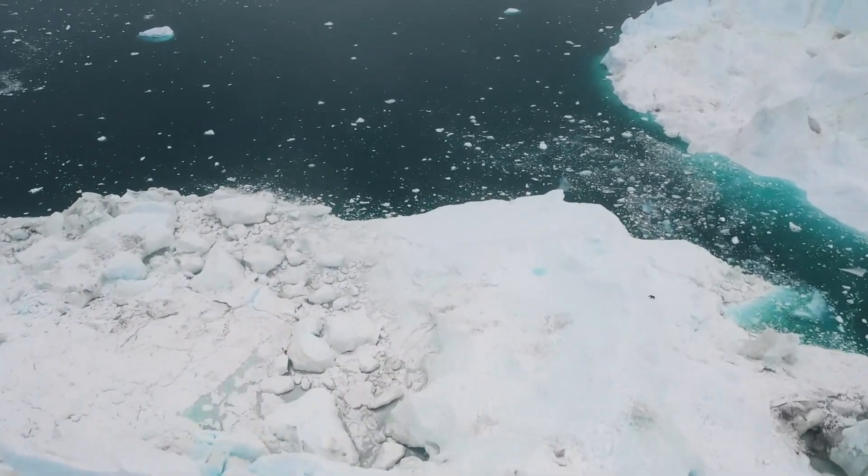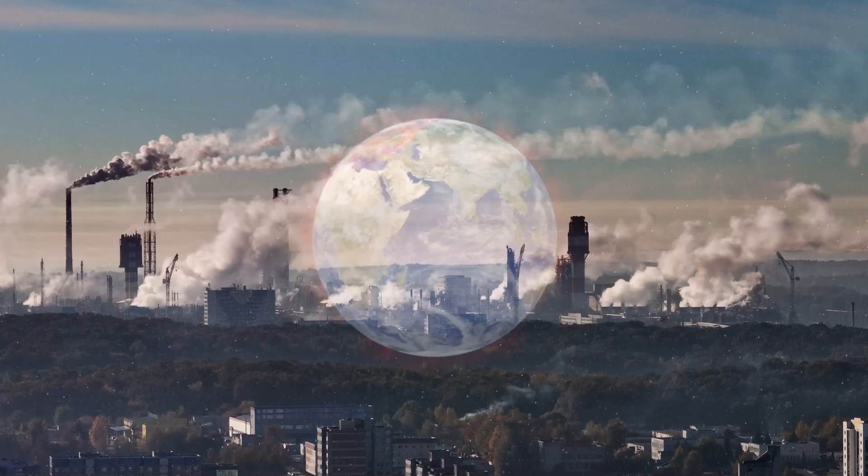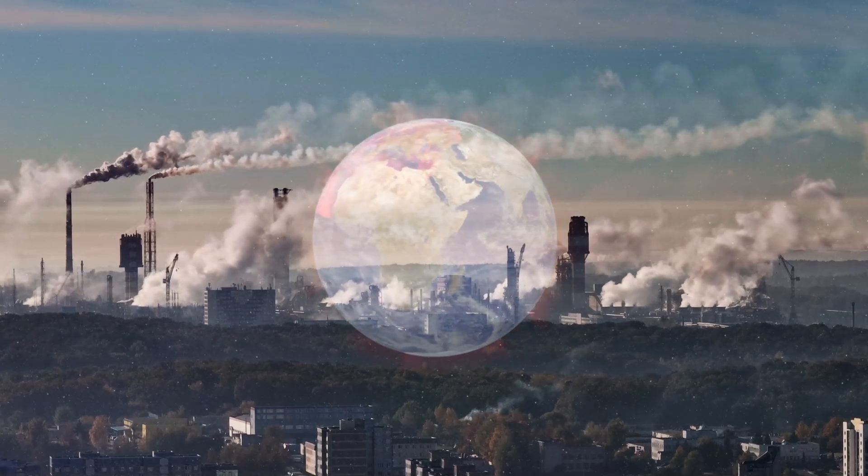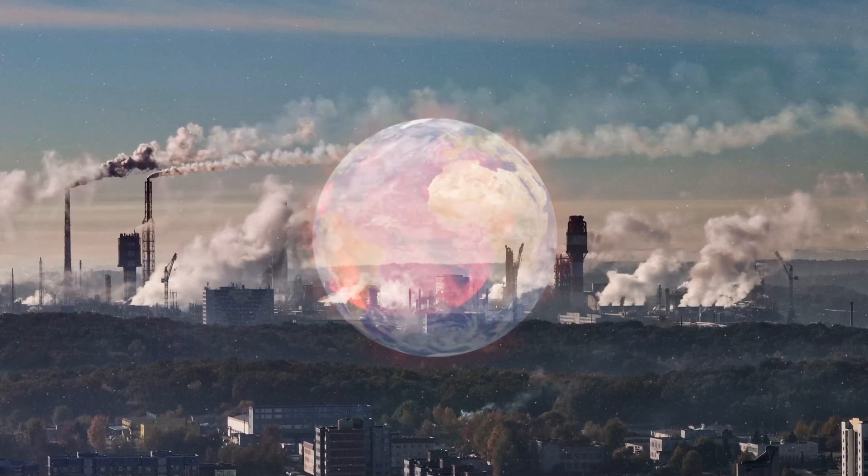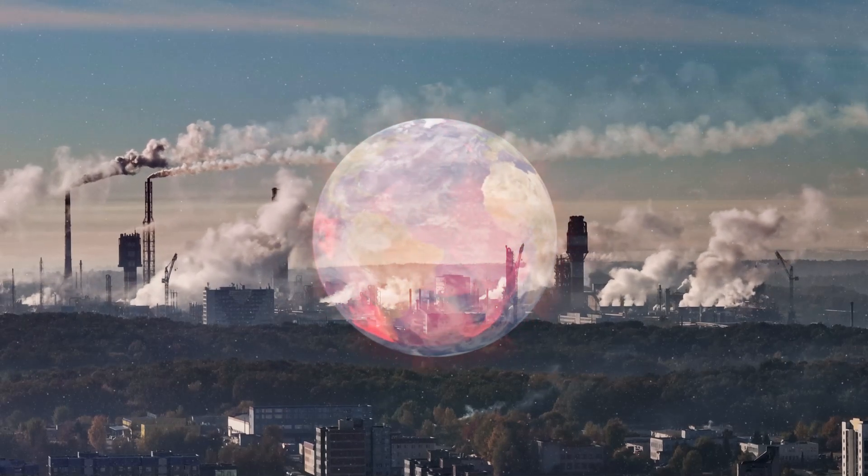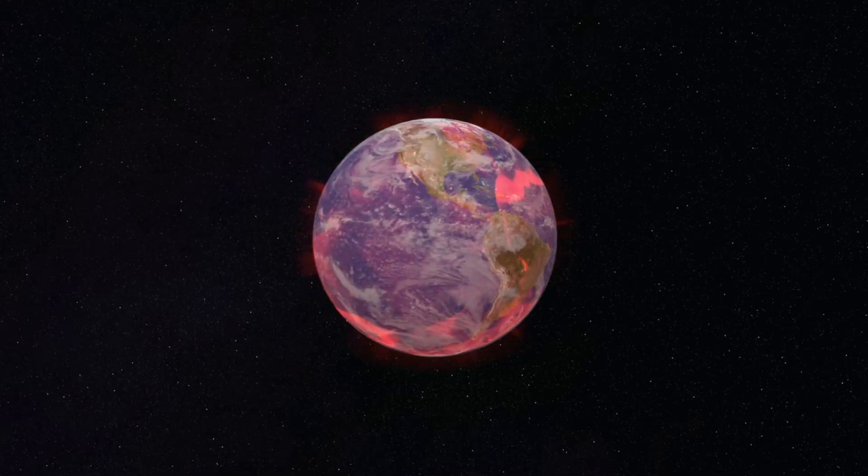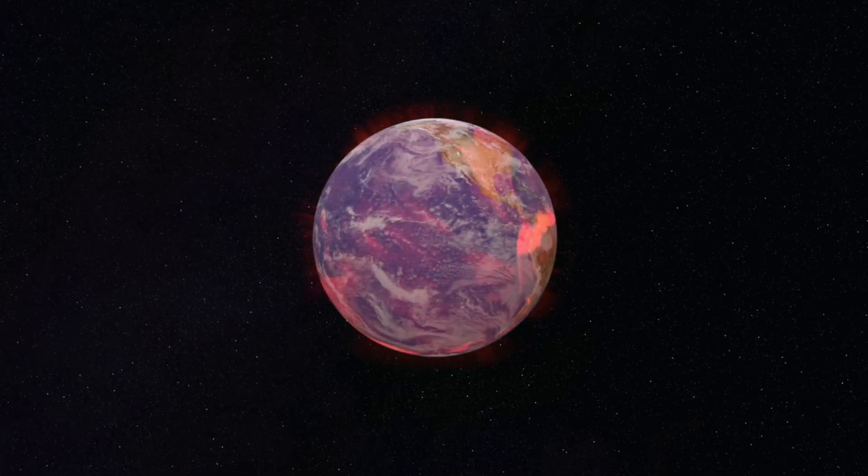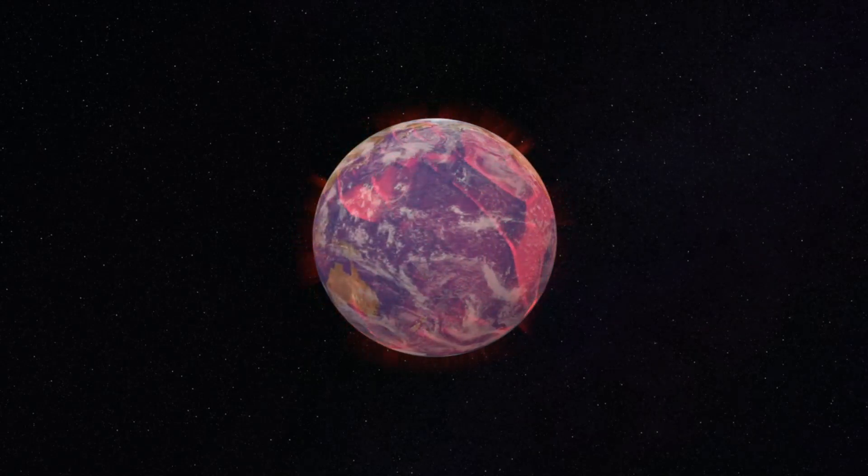The third factor that affects the Earth's rotation is climate change. Climate change is the long-term change in the Earth's weather patterns caused by the increase of greenhouse gases in the atmosphere. The greenhouse gases trap the heat from the sun and raise the Earth's temperature. This has many effects on the Earth's environment, such as the melting of the glaciers, the rise of the sea level, the change of precipitation, the shift of wind patterns, and the increase of extreme weather events.